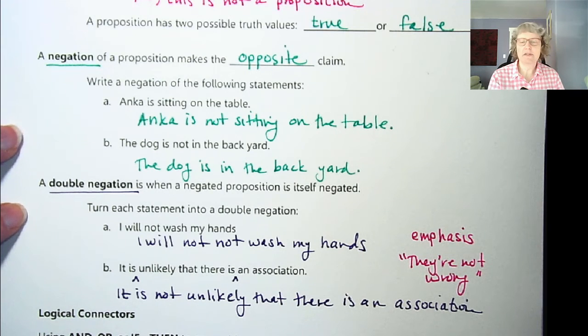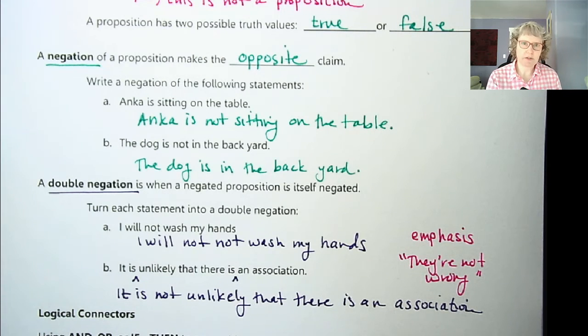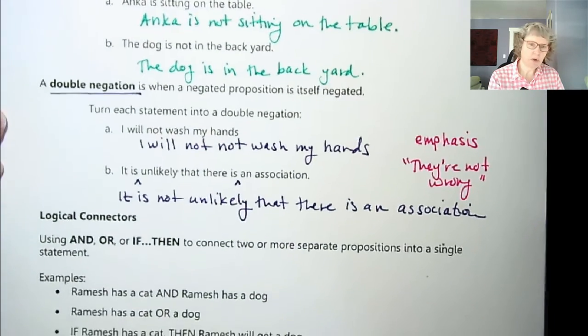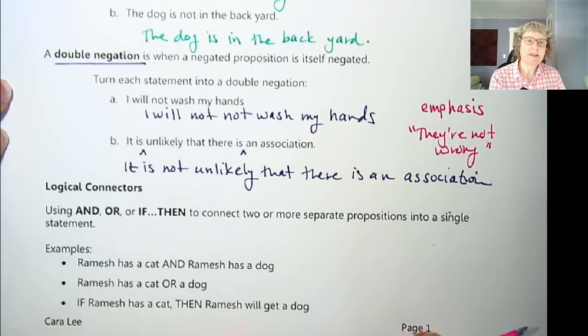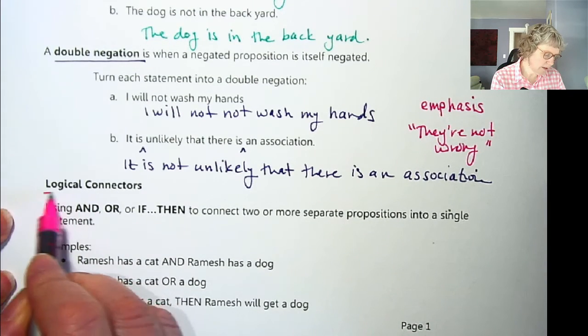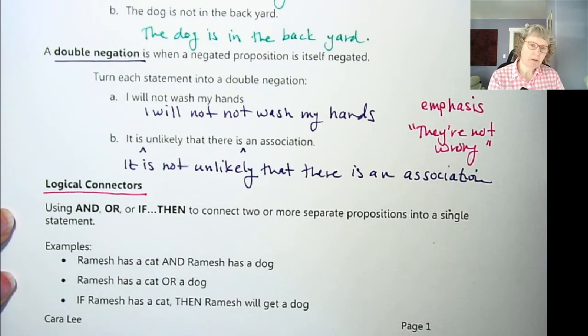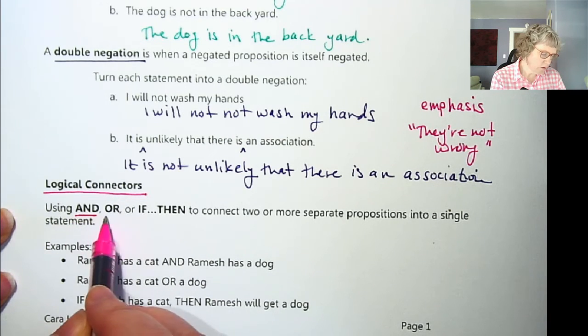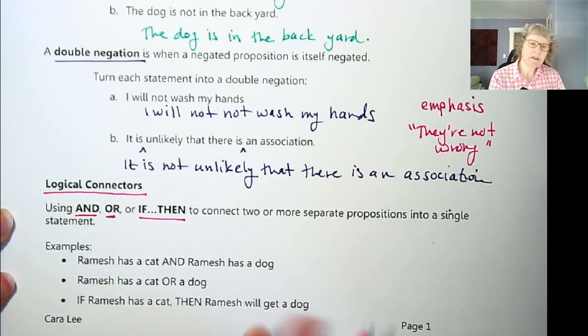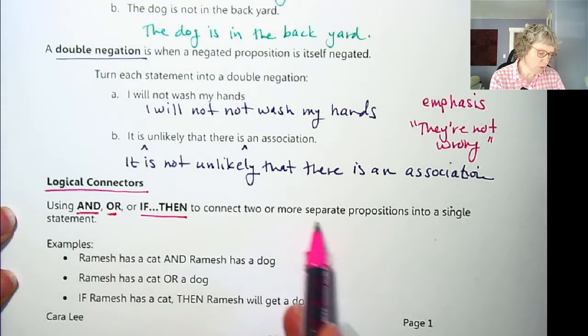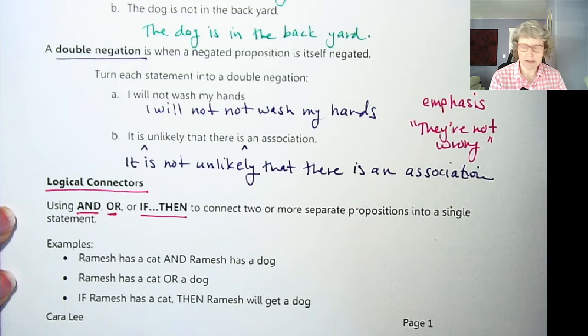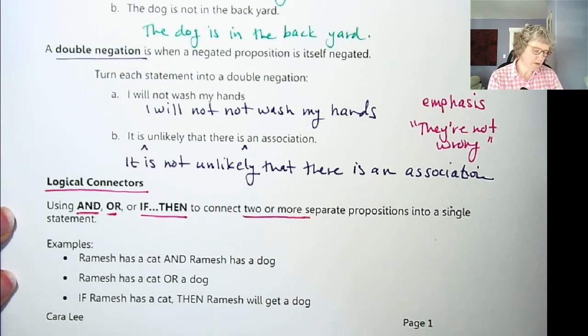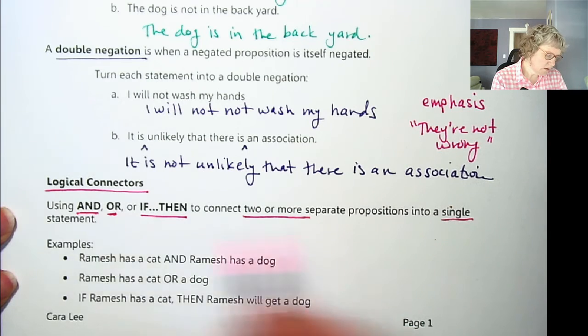So this is a negation. This is something you're doing on one proposition, a single statement. But we also might want to put different statements together. And so to do that, we use logical connectors. So some connectors, I'm sure you're familiar with these, you've heard of and, or, and then another one is if then. So these connect two or more, whereas the negation is working on a single statement. These connect two or more separate propositions into a single statement.